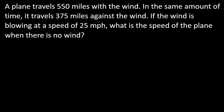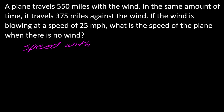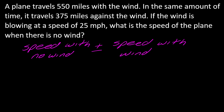Just one other way you could see this is with planes — it's still the same idea, just think about wind and air. A plane travels 550 miles with the wind in the same amount of time it travels 375 miles against the wind. If the wind is blowing at 25 miles per hour, what is the speed of the plane when there is no wind? Speed in this case is speed with no wind, plus or minus the wind speed. Flying against the wind means you go slower; flying with the wind means you go faster. Try to set this up and then hit play when you're ready.